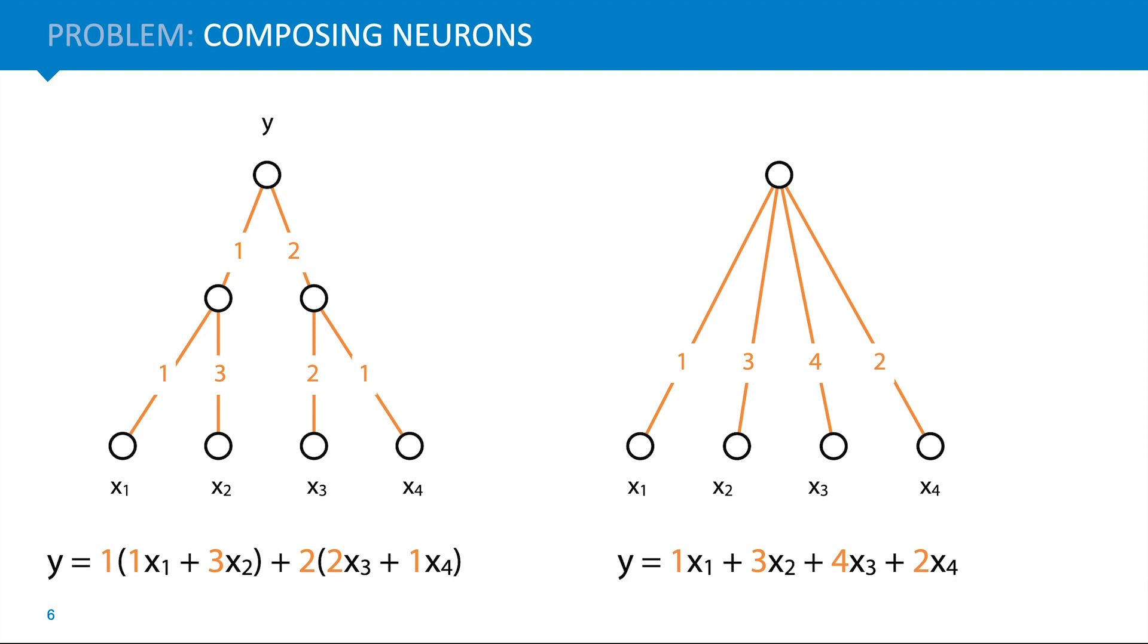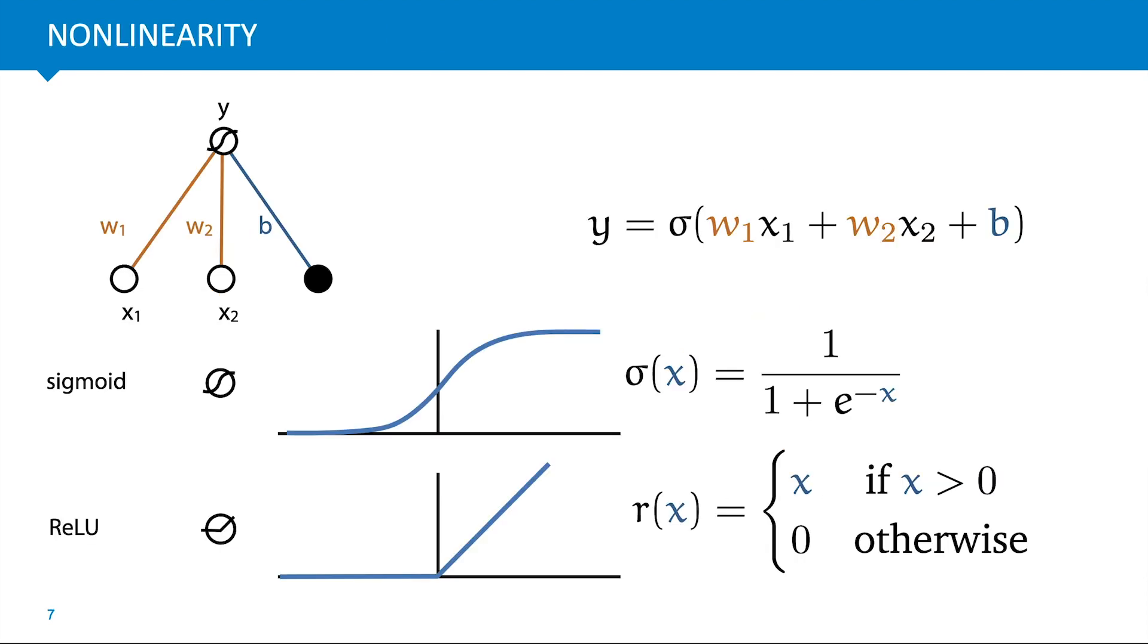So what you need to get a network of perceptrons that can do more than any single perceptron is to introduce a non-linearity. A non-linearity is very simple. It's just a function that you put after the output of the perceptron. So you compute the perceptron as before, but afterwards you take the single scalar output and feed it to one scalar function, which we indicate by a sigma.